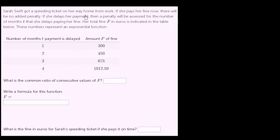Sarah Swift got a speeding ticket on her way home from work. If she pays her fine now, there will be no added penalty. If she delays her payment, then a penalty will be assessed for the number of months t that she delays paying her fine. Her total fine f in euros is indicated in the table below.